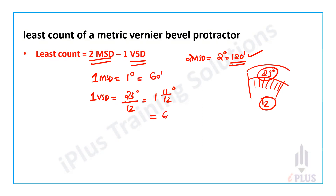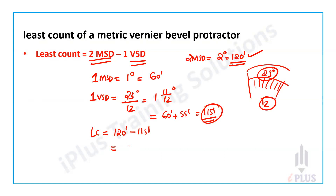One degree in the world, plus eleven by twelve on the other — that difference is 120 degrees minus 115 degrees, so that is 5 minutes.